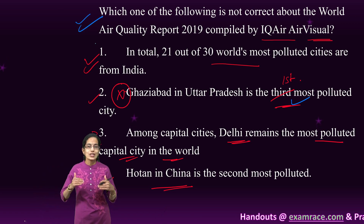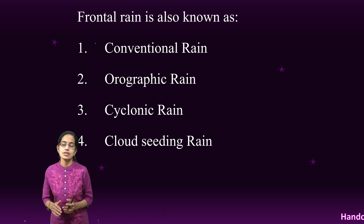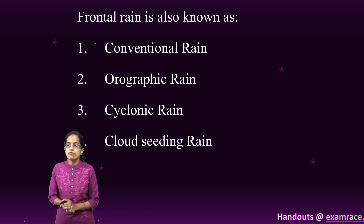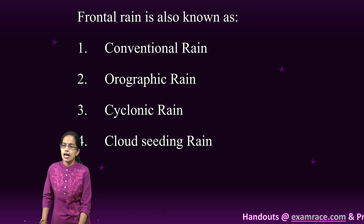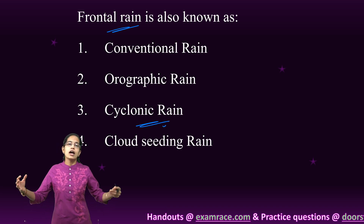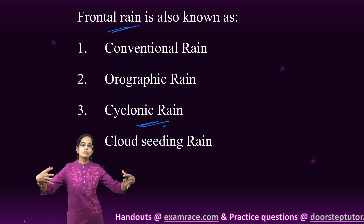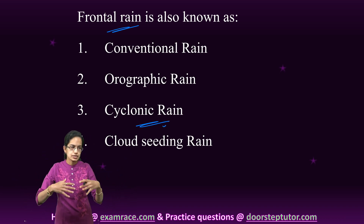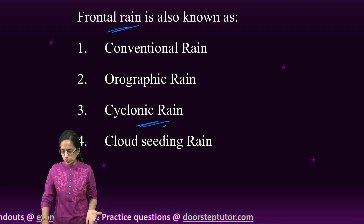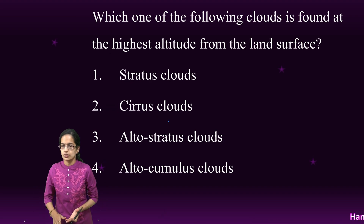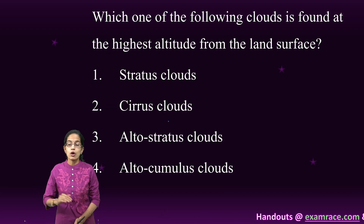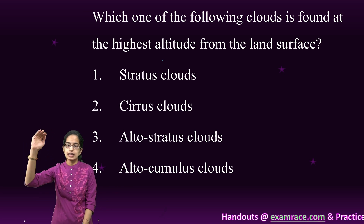Some questions were also based on recent and contemporary happenings you must be aware about. Frontal rain, also called cyclonic rain, is caused by two different air masses coming together and the adiabatic cooling caused in the process.